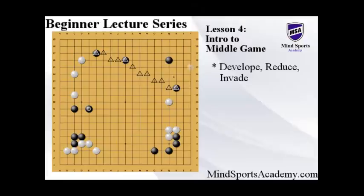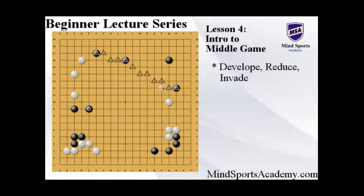If you go too far — for example, if we go behind the line of influence — this is considered an invasion because our opponent can very easily surround us and attack us. Therefore, simply playing on the line of influence and reducing this position is a valid option. For example, you can play here, here, here, or here. While some moves are better than others, for our level, just playing on the line and pushing the position down will do our goal. Remember, it is more important to understand the concept than the exact moves at this level.